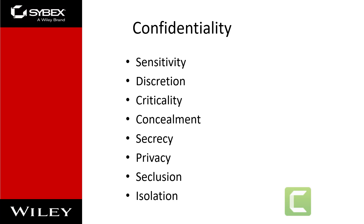The management of the relationship between subjects and objects is known as access control. For confidentiality to be maintained on a network, data has to be protected from unauthorized access, use, or disclosure while in storage, in process, and in transit. Unique and specific security controls are required for each of these states of data, resources, and objects to maintain confidentiality.